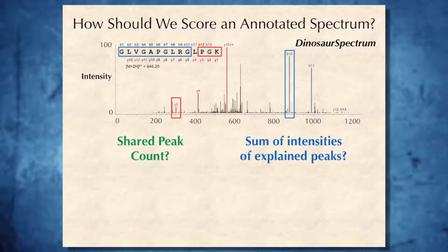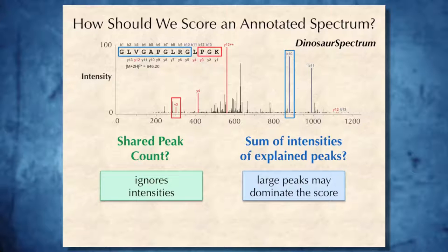These two alternatives bring up the question of how should we score an annotated spectrum? Should we score it as the shared peak count? Or maybe we should simply sum up the intensities of all explained peaks? Both options have some disadvantages. For example, shared peak count ignores intensity.